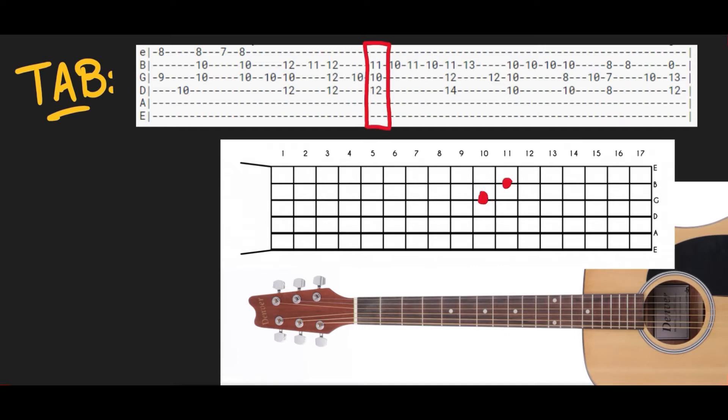Making tabs from scratch usually takes listening to a song about a million times and painstakingly finding the right notes and the best places to play them, and then typing them all in as you go. The goal of this program was to democratize this process by making the conversion from a music file to a tab super easy.